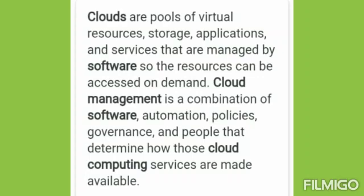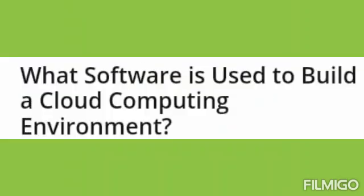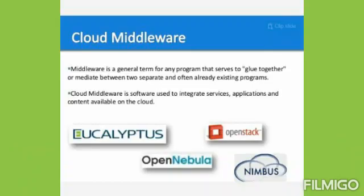Today in this video, we will be seeing what is cloud software. There are various tools or software used as middleware in cloud computing. First is Eucalyptus software, second is Nimbus software, third is OpenNebula software, and fourth is CloudSim software. Today I will discuss about Eucalyptus software.